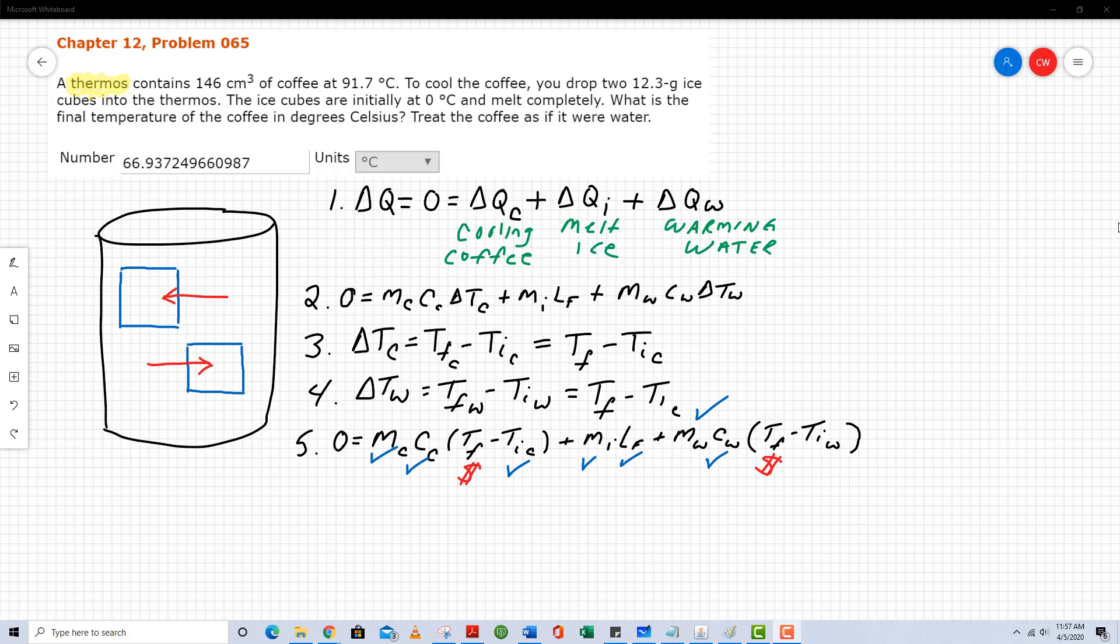Step two just develops this. The change in heat content of my cooling coffee is MC delta T. And I need to be really careful with my subscripts. Mass of the coffee times specific heat of the coffee times the temperature change of the coffee. The second term in step two is mass of the ice times the latent heat of fusion of the ice.